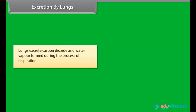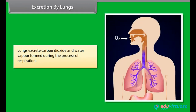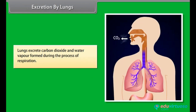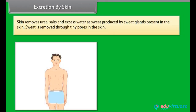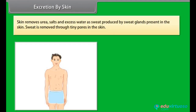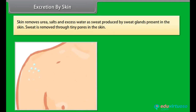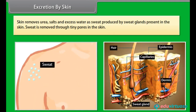Lungs excrete carbon dioxide and water vapor formed during the process of respiration. Skin removes urea, salts, and excess water as sweat produced by sweat glands present in the skin.